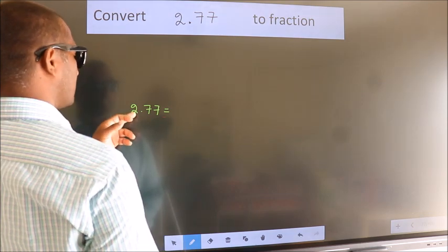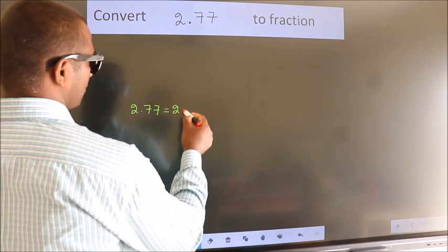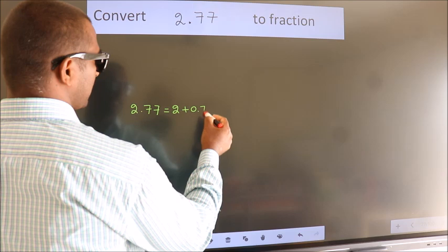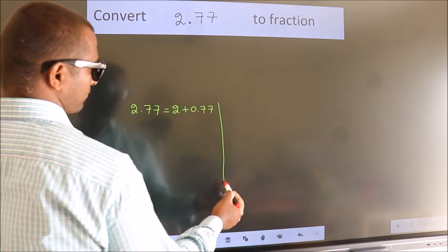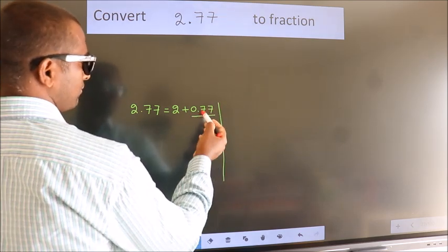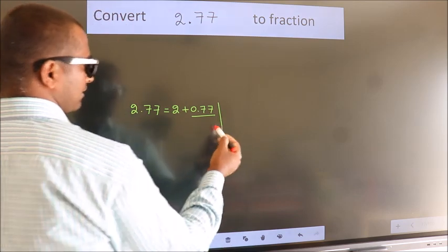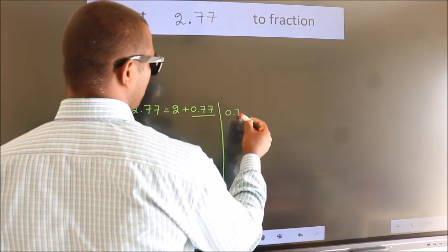First we should break this into 2 plus 0.77. Next convert this to fraction over here. So 0.77.